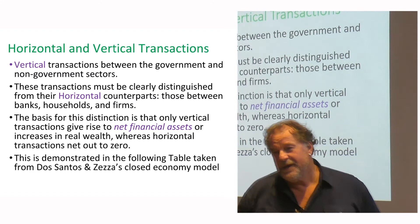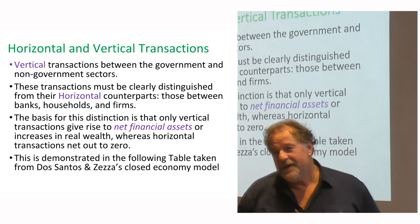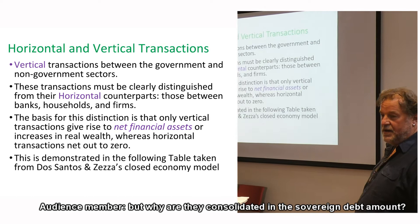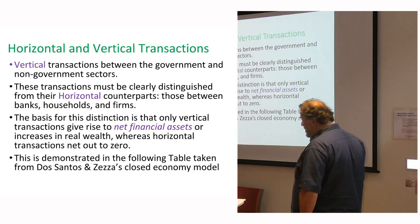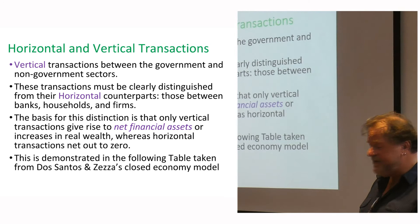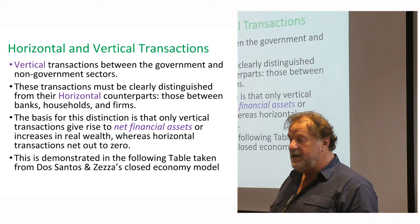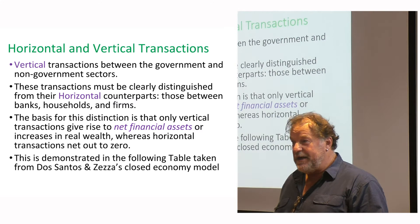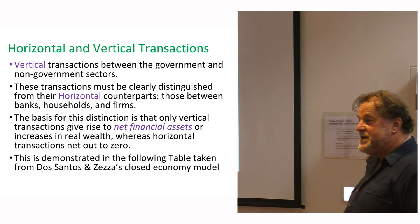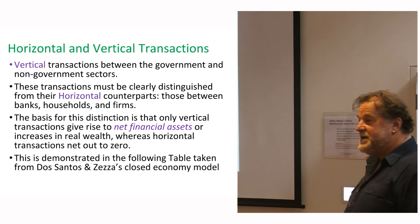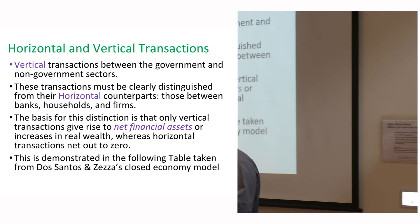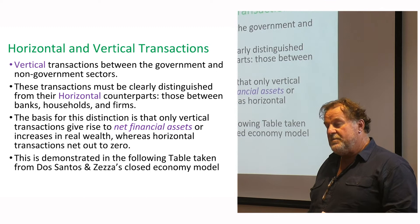On how state and local governments fit in: state governments are financially constrained, while federal governments are not. State governments worry about credit ratings — losing a AAA rating means higher interest costs. But federal governments, because they issue the fiat currency, don't have a constraint on their spending. In the national income framework, all accounts are consolidated because you're looking at the net position. In China, the national government has low debt but provincial governments have very high debt levels, which creates nervousness about asset price inflation and capital flight.